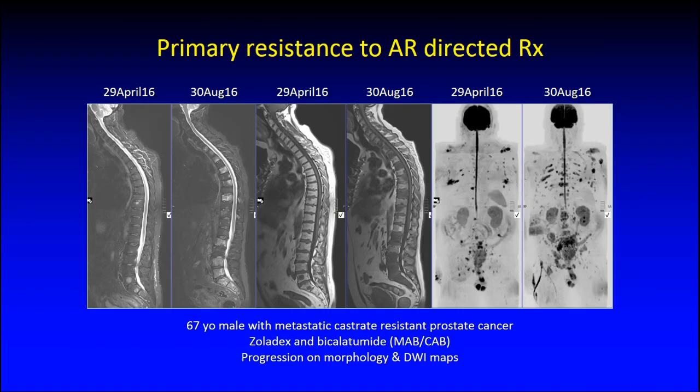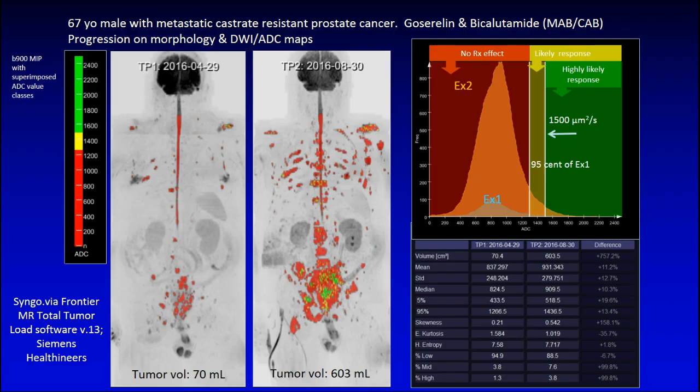Here is a 67-year-old patient with metastatic prostate cancer progressing on maximum androgen blockade. The STIR sequence and T1 show new metastases throughout the spine, also observable on the diffusion sequences. The ADC pretreatment was 837 and post-treatment was 931 — no change in ADC. The corresponding histograms and the distribution of disease are shown.